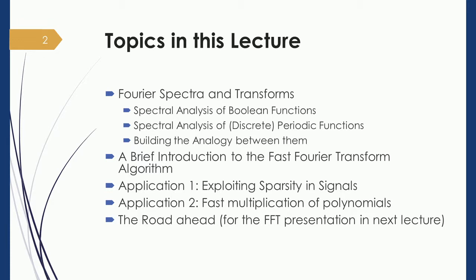The second motivating application is fast multiplication of polynomials. If you want to multiply two polynomials of degree d, the typical algorithm requires Θ(d²) time. However, we will describe a suitable Fourier transform for polynomials and show that such transformations can be computed in O(n log n) time using the fast Fourier transform algorithm. In this transformed space, multiplication is much faster and can be done in O(d) time.